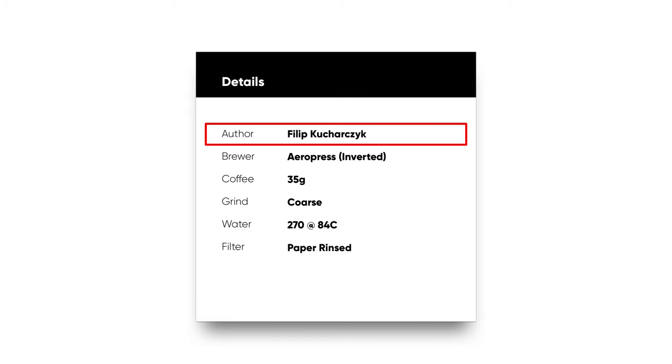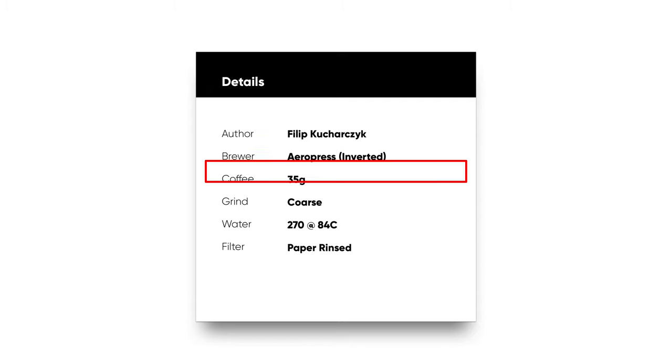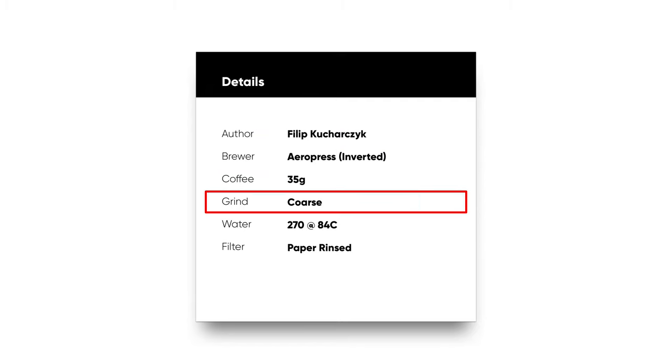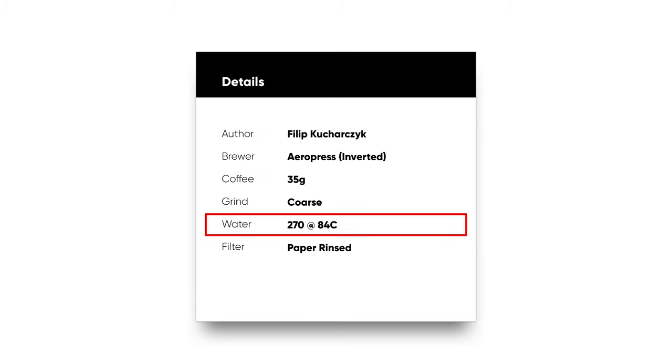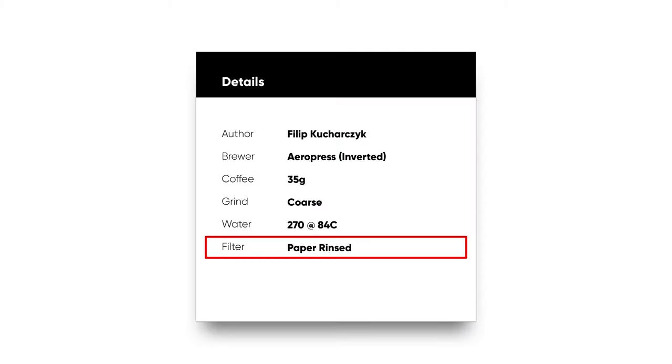Let's start with Recipe Details. This section contains all of the important information about the recipe like the author, the brewer, coffee dose, grind size, water quantity and water temperature. Some recipes may require additional information like filter type being paper, or needing a distributor like the WDT, and this information would be mentioned in this section too.